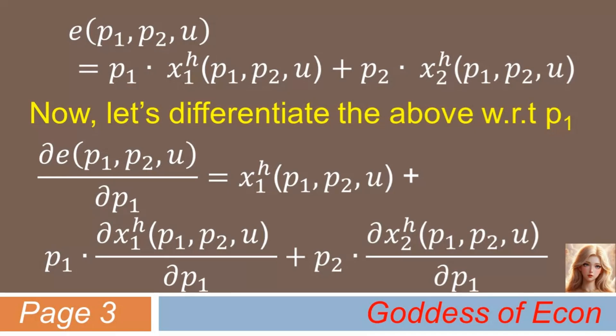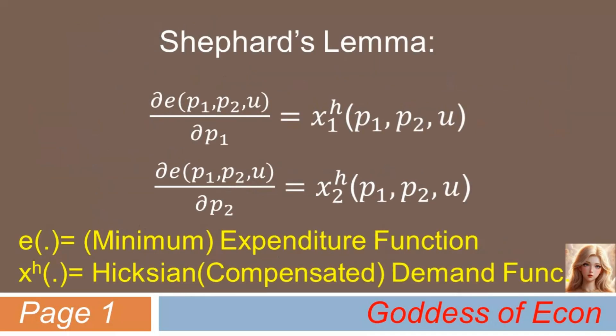Now, let's go back to slide 1 to see what Shepard's lemma stated. Do you see it? The lemma states that there should be only one term on the right-hand side of the equation, which is the Hicksian demand for good 1. However, we saw that when we simply differentiate the expenditure function, we are left with more than the Hicksian demand function on the right-hand side. Now, let's go back to slide 3 to see what the result exactly looked like.